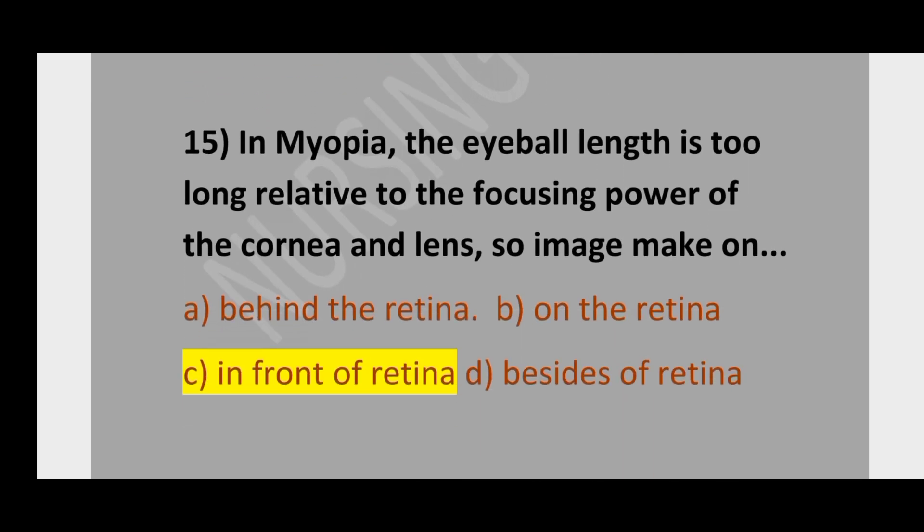Question number 15. In myopia, the eyeball length is too long relative to the focusing power of the cornea and lens, so an image is made: option A, behind the retina; option B, on the retina; option C, in front of the retina; option D, beside the retina. The correct option is in front of the retina.